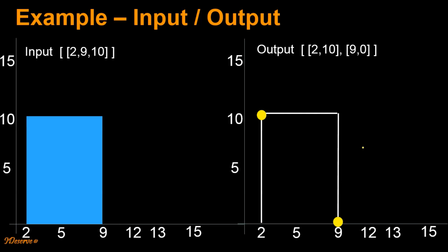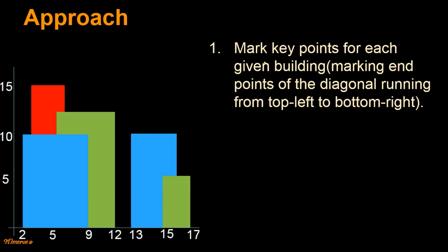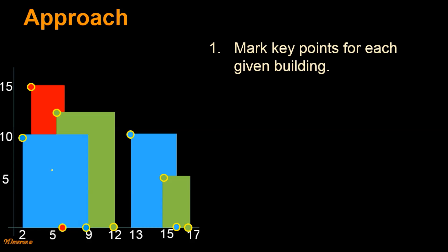Now let's look at a couple of ways to solve this problem. In the first approach, the first step is we mark key points for each given building. We can mark these key points by simply marking the endpoints of a diagonal running from top left to bottom right for each building. Note that in the first step, the key points we need to mark are independent of other buildings. So for the blue building, the first key point is at [2, 10] and the second key point is at [9, 0]. Similarly for the red building, the first key point would be at [3, 15] and the second at [6, 0].